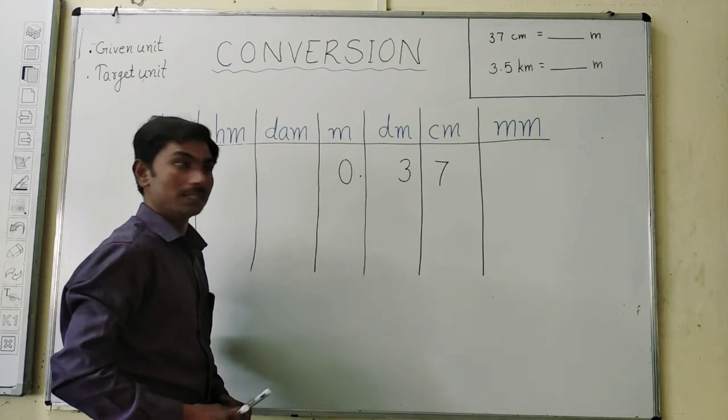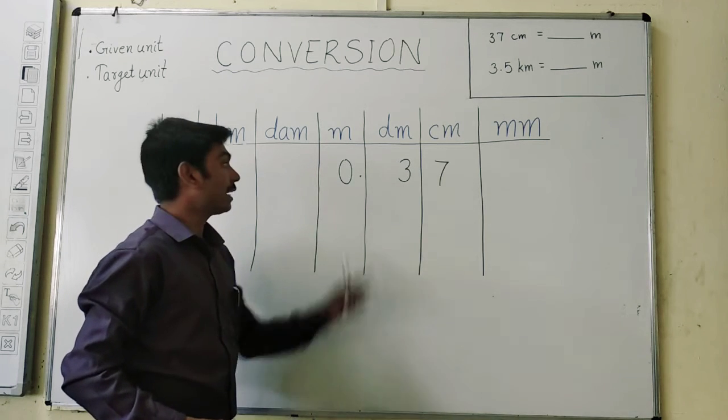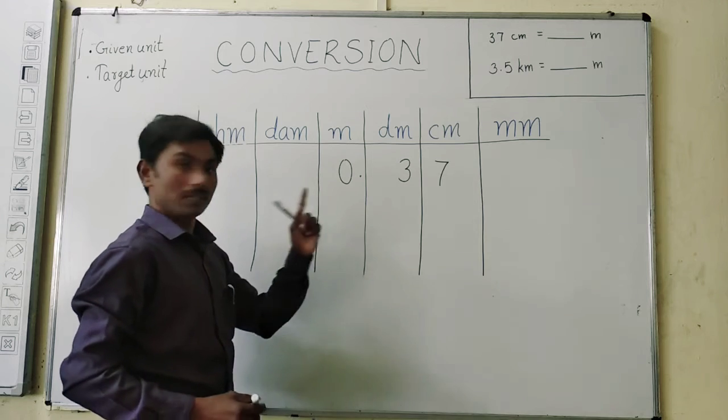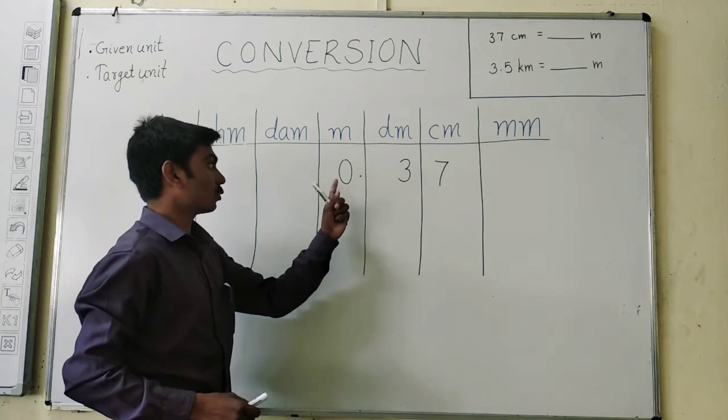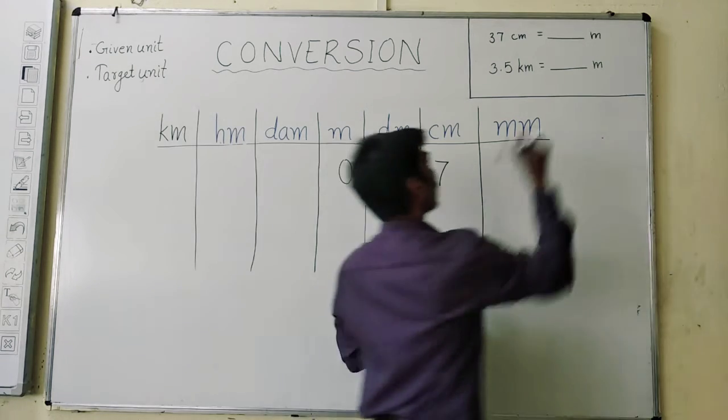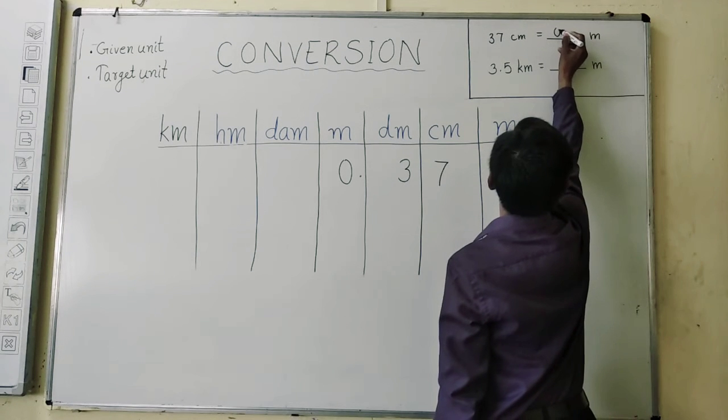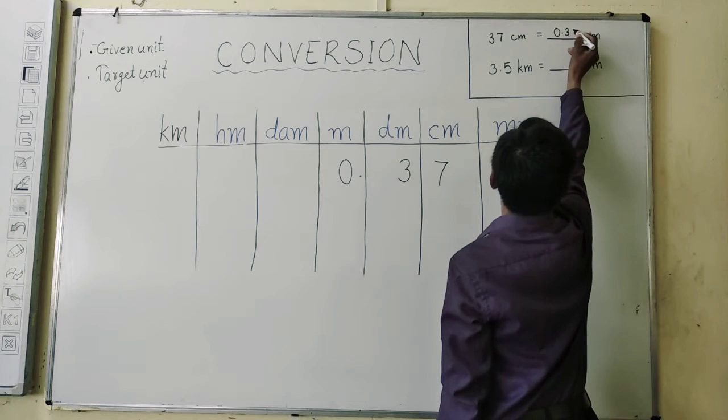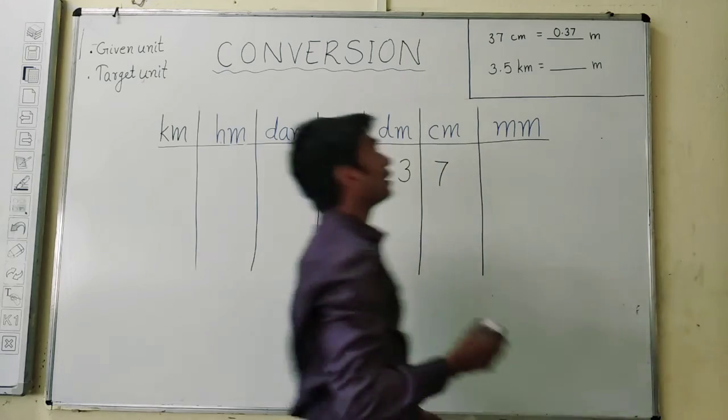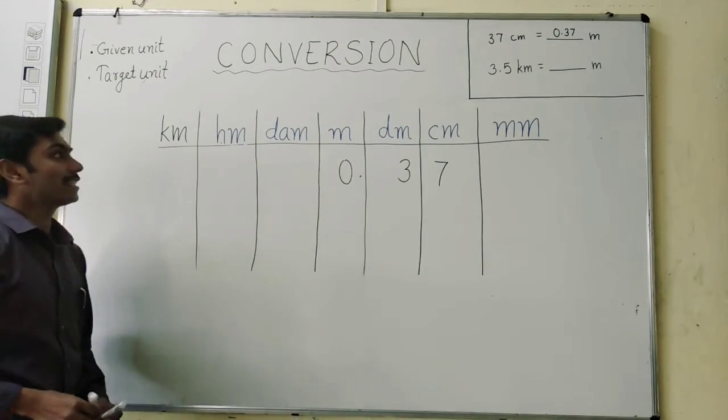That is our desired answer. So 0.37. Our answer will be 0.37 meter. This is the answer. Let us take another example.